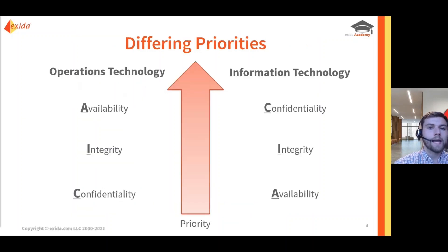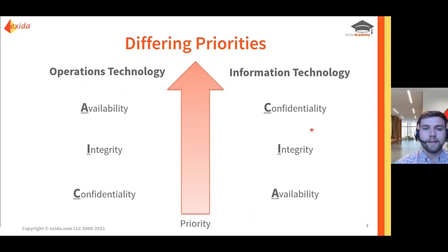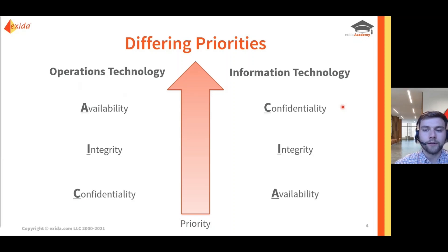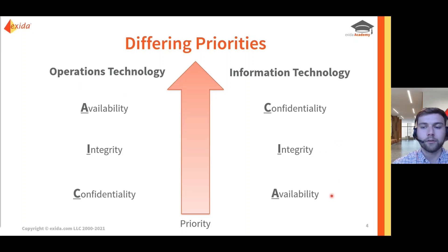When we look at OT or IACS, we can see that they have different priorities than a typical IT system. For corporate or business networks, the number one priority for the data they're protecting is confidentiality — maintaining sensitive data and ensuring that no unauthorized users are able to gain access or have that data stolen is the primary goal and their number one objective. Integrity and system availability are less critical.